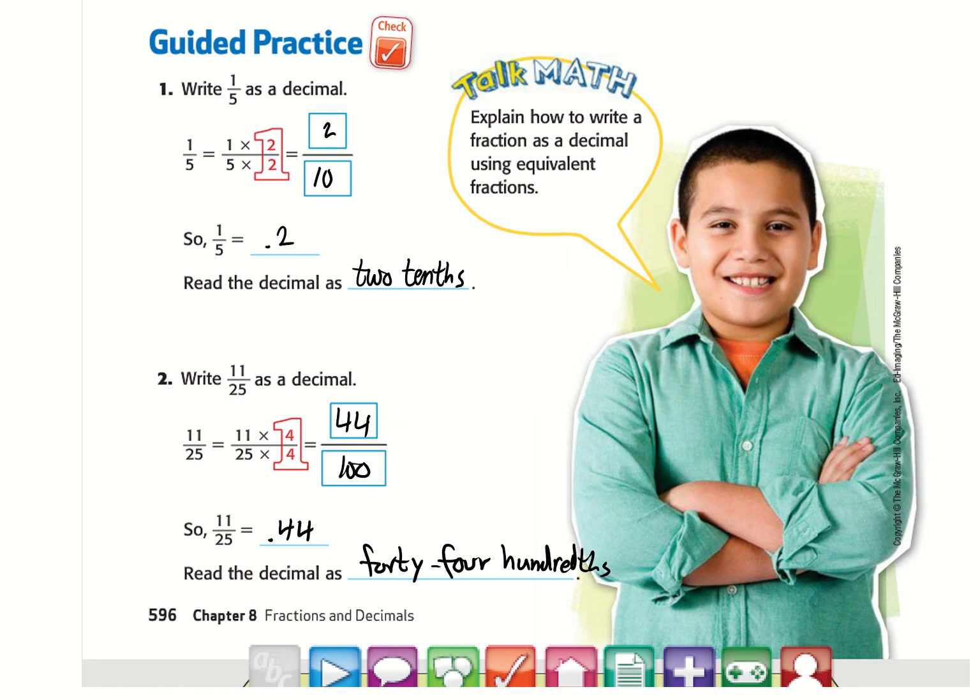In our guided practice, 5 can change to a 10 by multiplying by 2. So we're going to multiply the top and bottom by 2. We get 2/10. The decimal is 0.2 or 2 tenths. Remember the 10 here is the same as the tenths here.